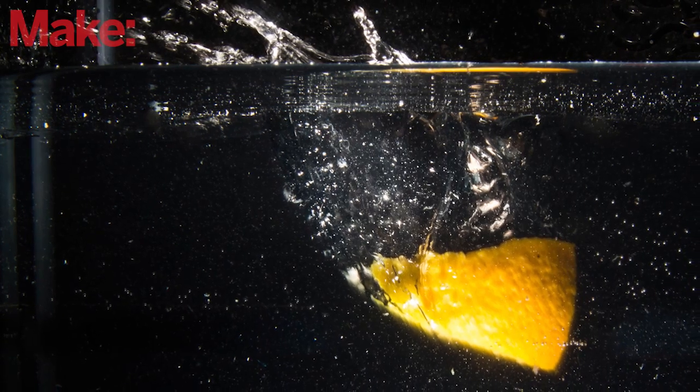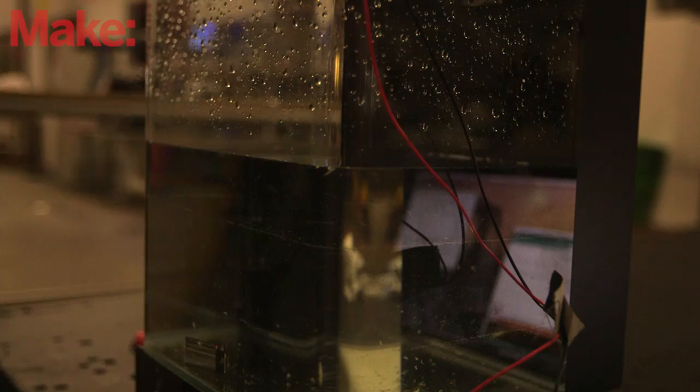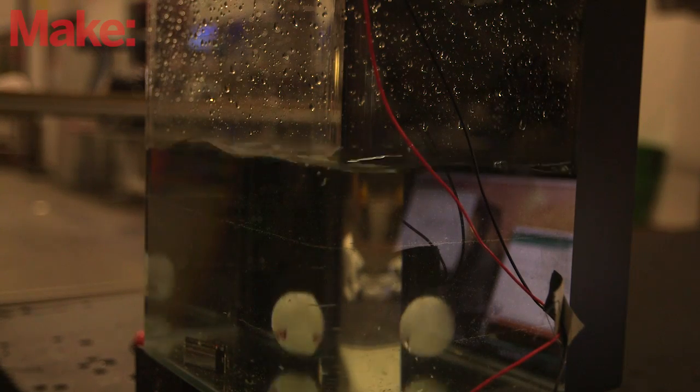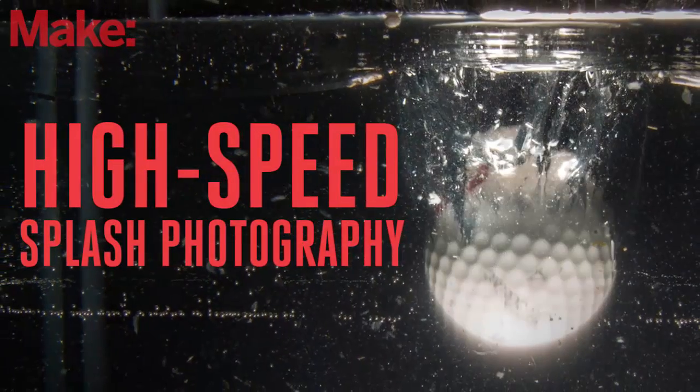They're also increasingly seen in commercial images. Look in your local supermarket and there's a high probability you'll find an image of a strawberry, chili pepper, or banana hitting the water captured by a high-speed flash. In this weekend project by Thomas Berg, we'll show you how to take perfect splash photos the easy way, by precisely timing the dropping of the object and the triggering of the flash using an Arduino microcontroller board.